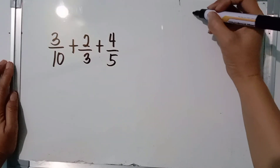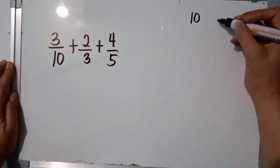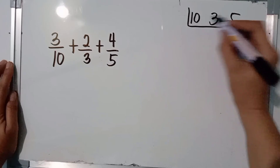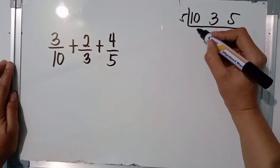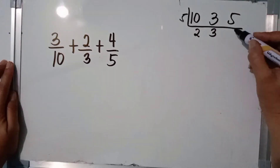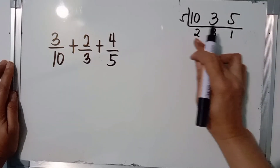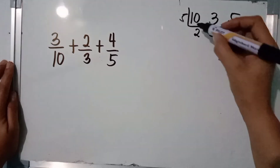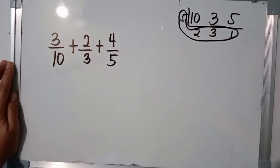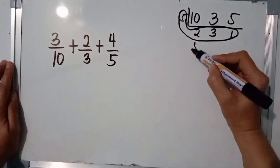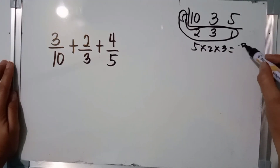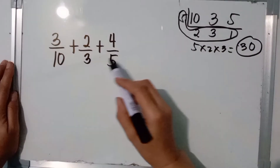Alin po ba ang may common prime factor? Yung 10 at saka 5. So, divide by 5: 10 divided by 5 is 2; 3 is not divisible by 5 so bring it down; 5 divided by 5 is 1. Now, 2, 3, and 1 have no more common prime factor. So, multiply all the divisors and remaining values: 5 times 2 times 3. 5 times 2 is 10; 10 times 3 is 30. Ang LCM or LCD ng 10, 3, and 5 ay 30.